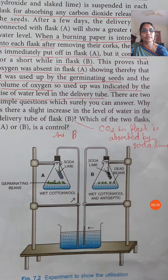In both flasks, wet cotton wool is placed for giving moisture to the germinating seed.